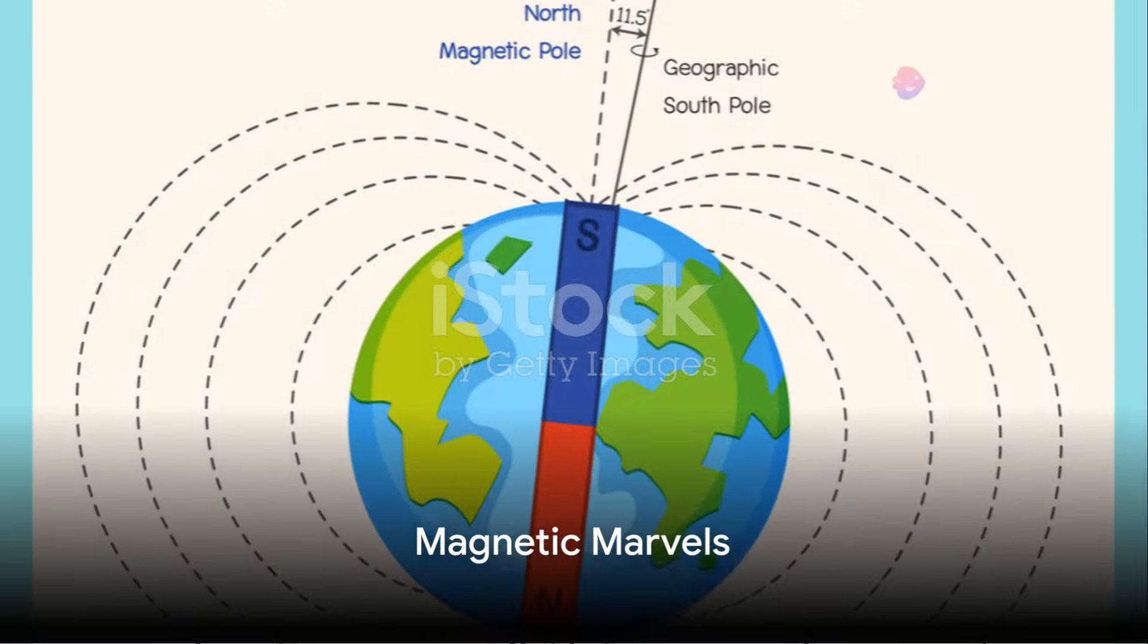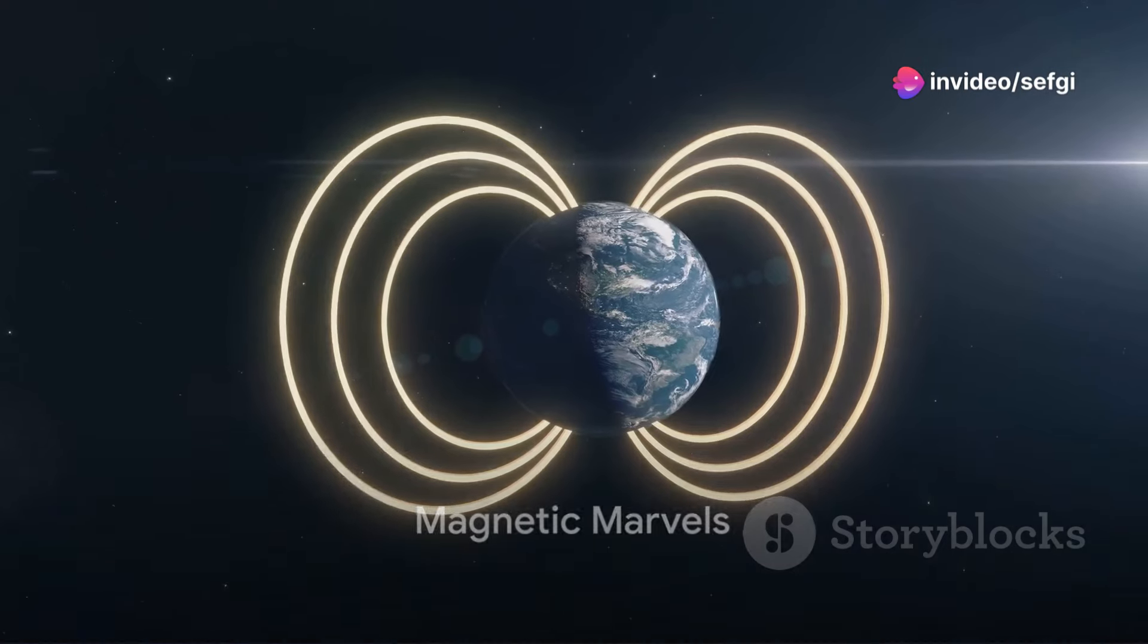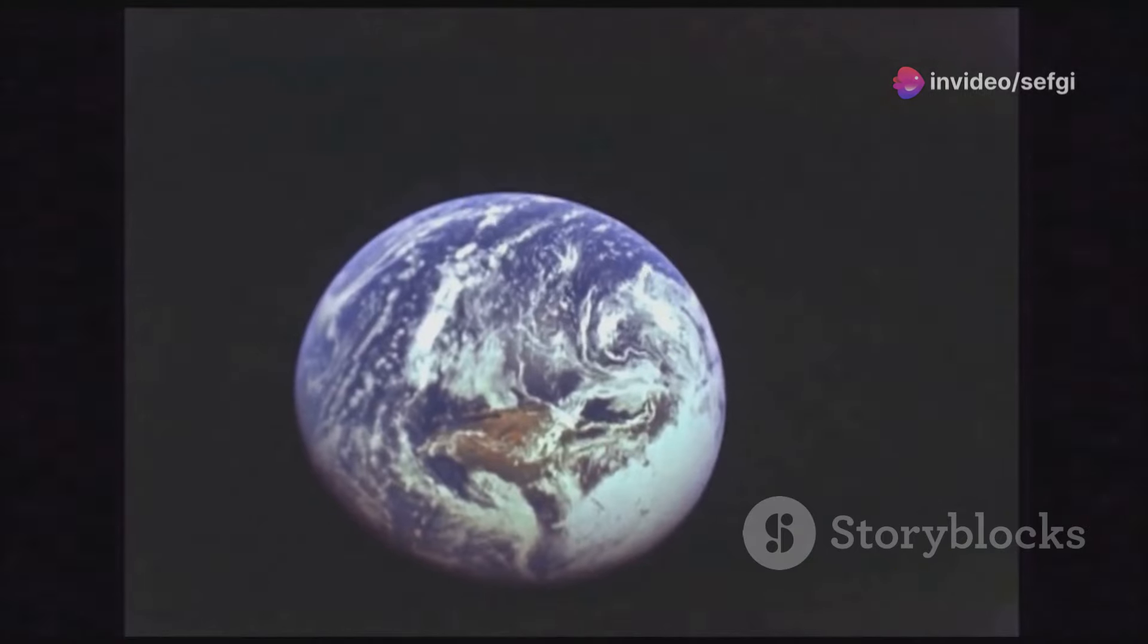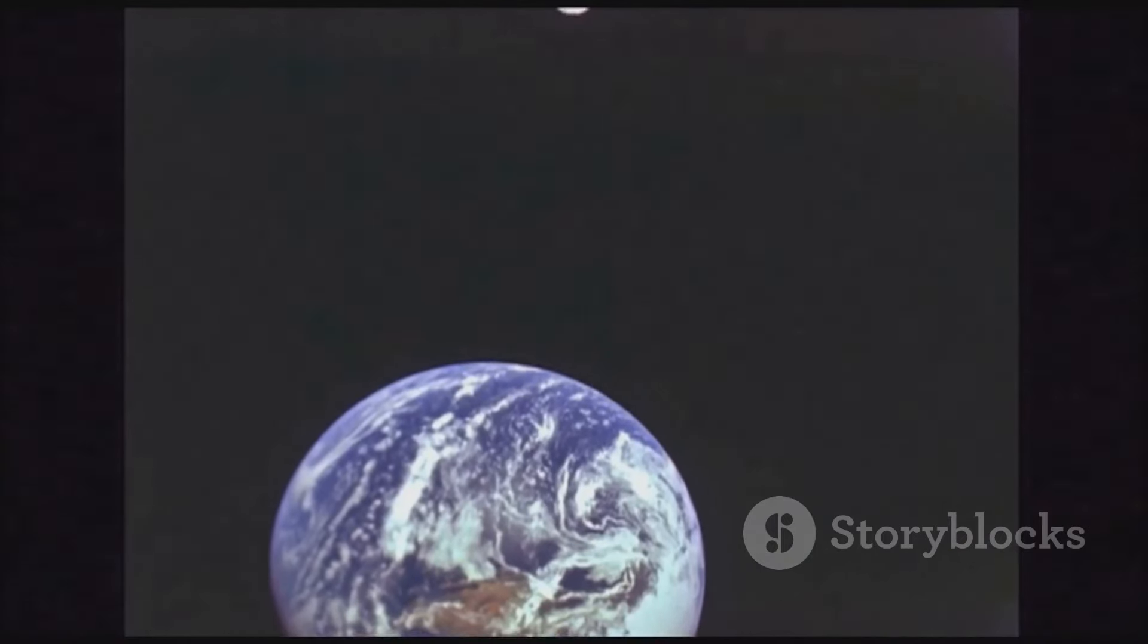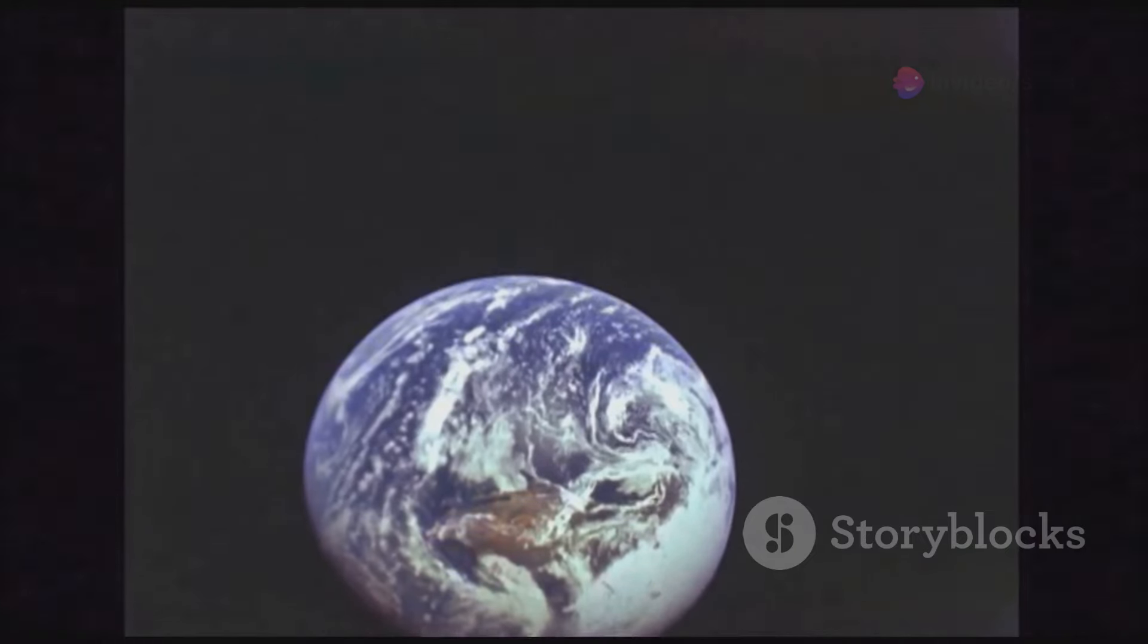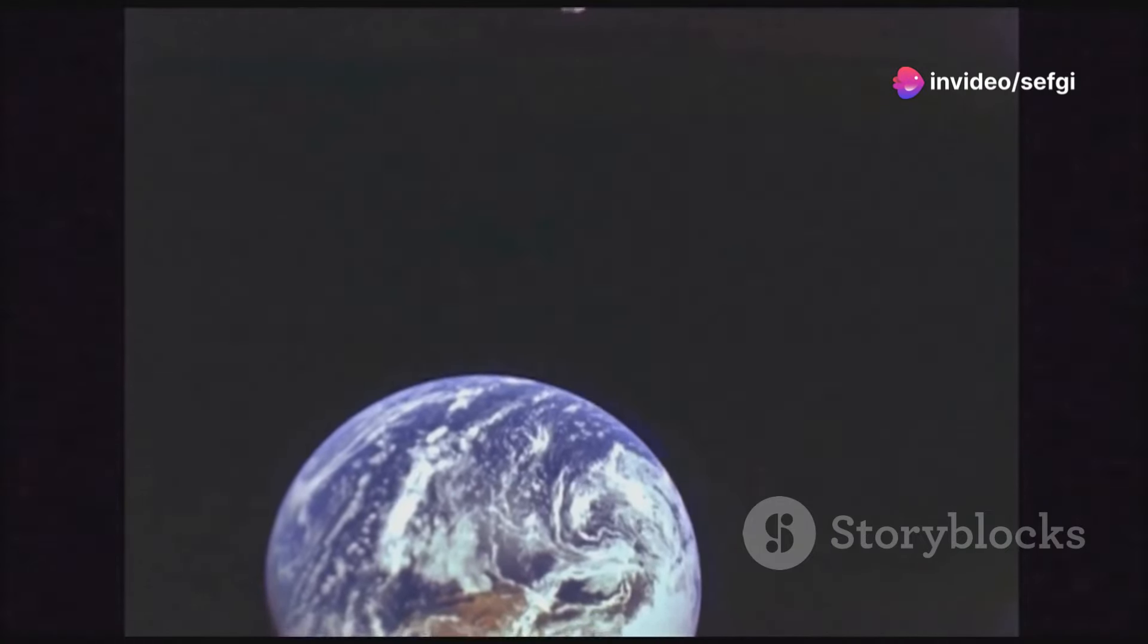Earth's magnetic field, our invisible shield in space, but did you know it's always on the move? Let's take a closer look. Just like our continents, the magnetic poles of our planet are always shifting, albeit at a much slower pace. This movement is due to changes in the flow of molten iron within Earth's outer core.